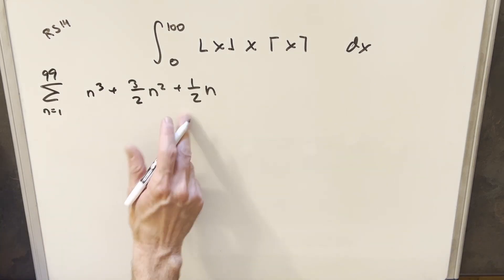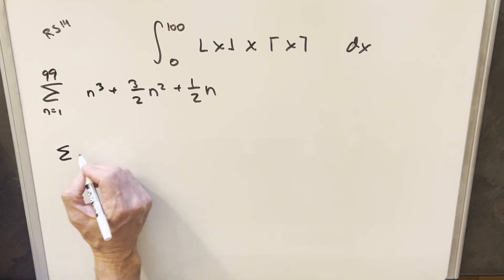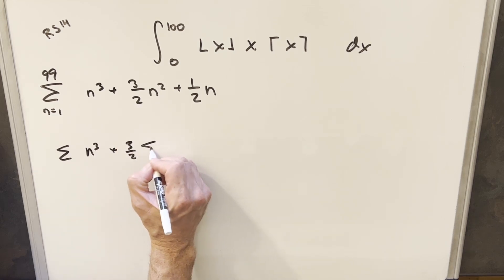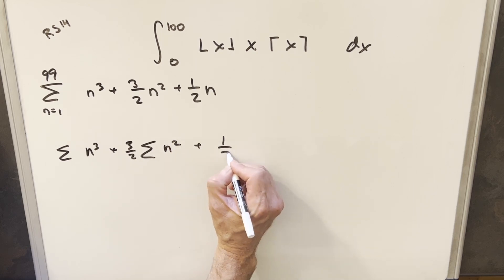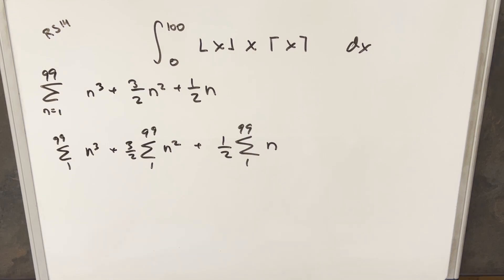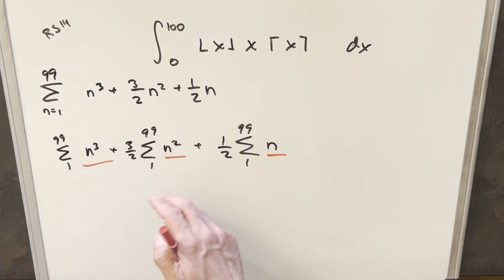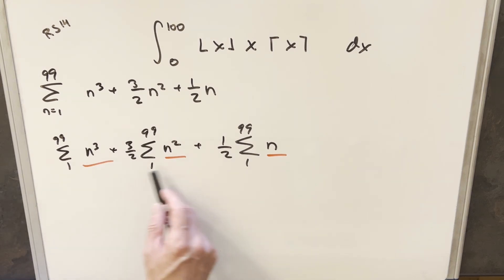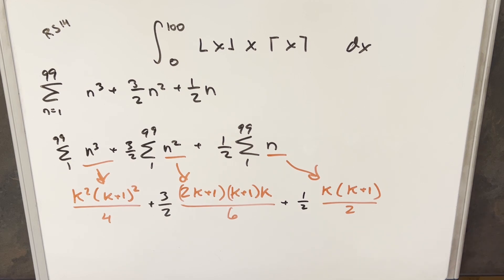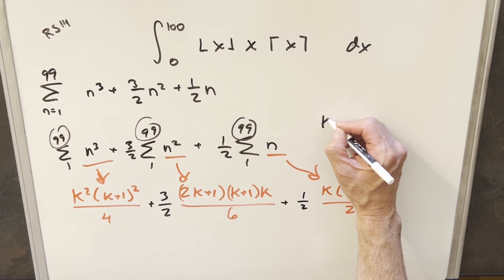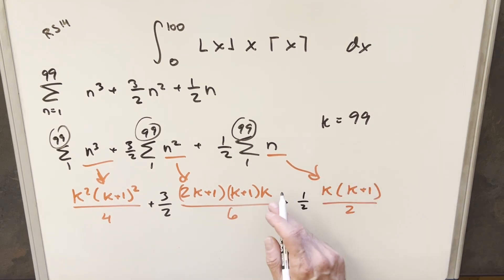Because we're adding within the sum, I can break this into three separate sums: one summing n cubed, one with three-halves out front summing n squared, and one with one-half out front summing n. The nice thing is we have closed-form formulas for each of these. Using k for the upper limit to avoid confusion with our n, we have formulas for the sum of the first k natural numbers, first k squares, and first k cubes. Our k value is 99, but I want to simplify the expression before plugging in 99.